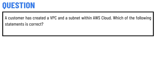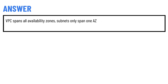Today's question is: a customer has created a VPC and a subnet within AWS cloud. Which of the following statements is correct? The correct answer is: a VPC spans all availability zones, and subnets only span one AZ.